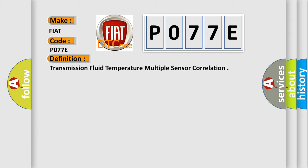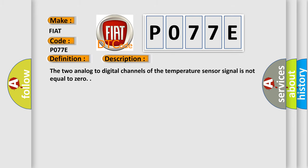And now this is a short description of this DTC code. The two analog to digital channels of the temperature sensor signal is not equal to zero.